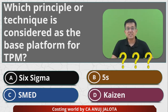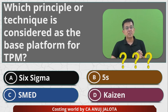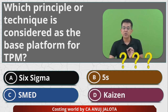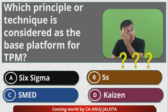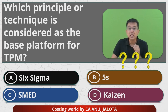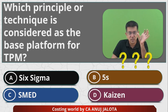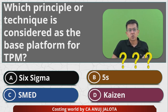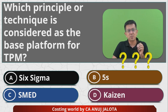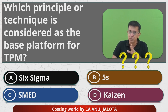Six Sigma is basically about how to avoid waste. TPM is based upon the principles of 5S. 5S is about trying to organize things in such a way that you get the best performance, and it comprises five different S's — which I have explained in previous MCQs.